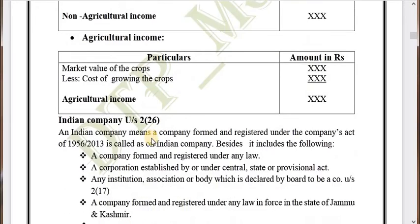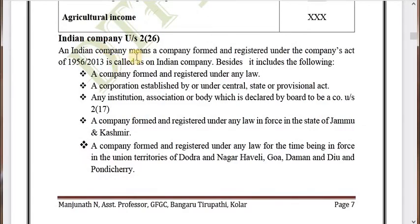Now we are going to see Indian company under Section 2(26). An Indian company means a company formed and registered under the Companies Act of 1956 or 2013. It also includes: a company formed and registered under any law, a corporation established by or under a central, state, or provisional act, any institution or body declared by the board to be a company under Section 2(17), a company formed under any law in force in the state of Jammu and Kashmir, and companies formed under laws of union territories of Dadra and Nagar Haveli, Goa, Daman, Diu, and Pondicherry.